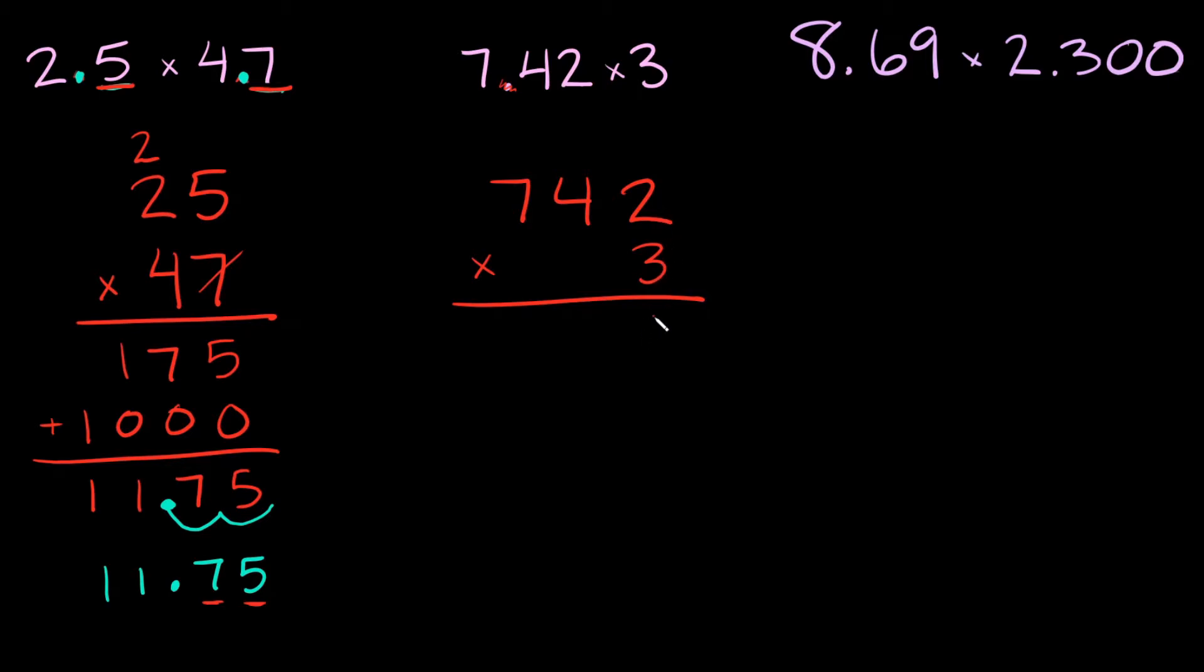Let's multiply these. So 3 times 2 is 6. 3 times 4 is 12, so I'll put the 2 here and I'll carry the 1. And then 3 times 7 is 21, and then 21 plus 1 is 22.